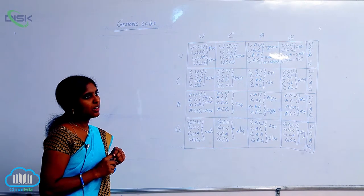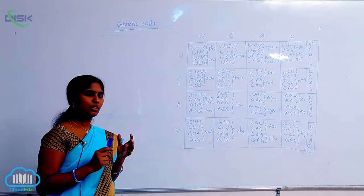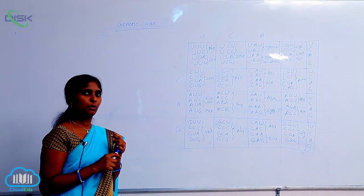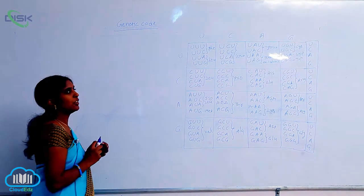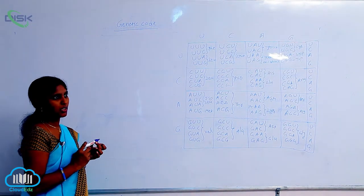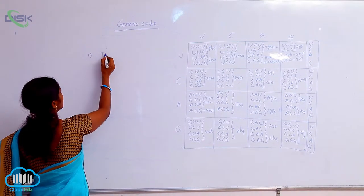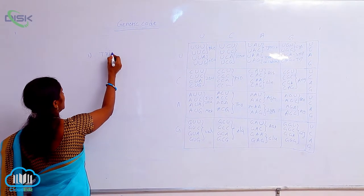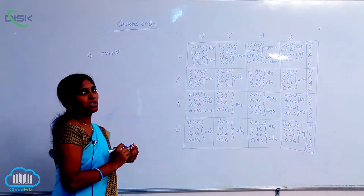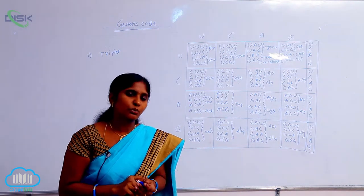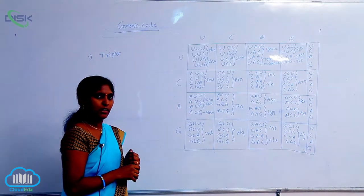The genetic codon has specific properties. The first property of the genetic codon is it must be triplet. The triplet concept is given by George Gamow. What is this triplet concept? We already discussed that genetic information is given in the form of four alphabets.